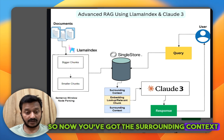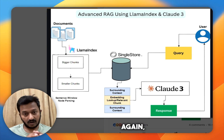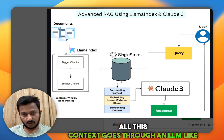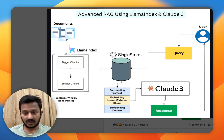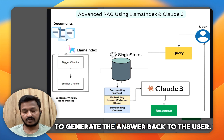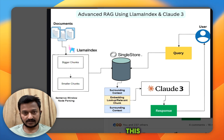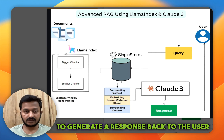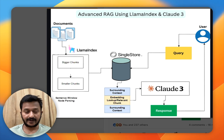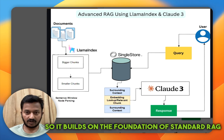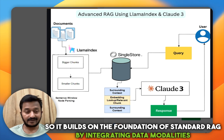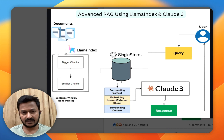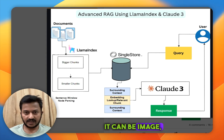You now have the surrounding context and the relevant chunk — all this context goes through an LLM like Claude 3, a multi-modal model, to generate the answer back to the user. This multi-modal RAG uses a combination of different data types to generate a response to the user query. It builds on standard RAG by integrating data modalities beyond just text — it can be image, audio, video, etc.